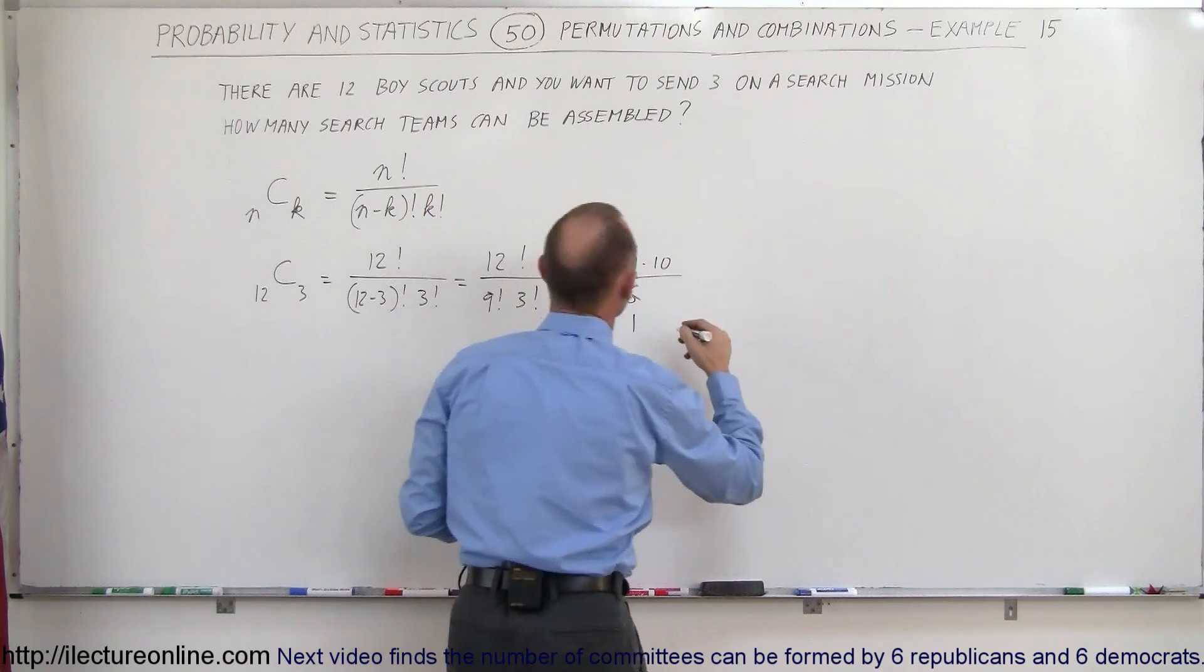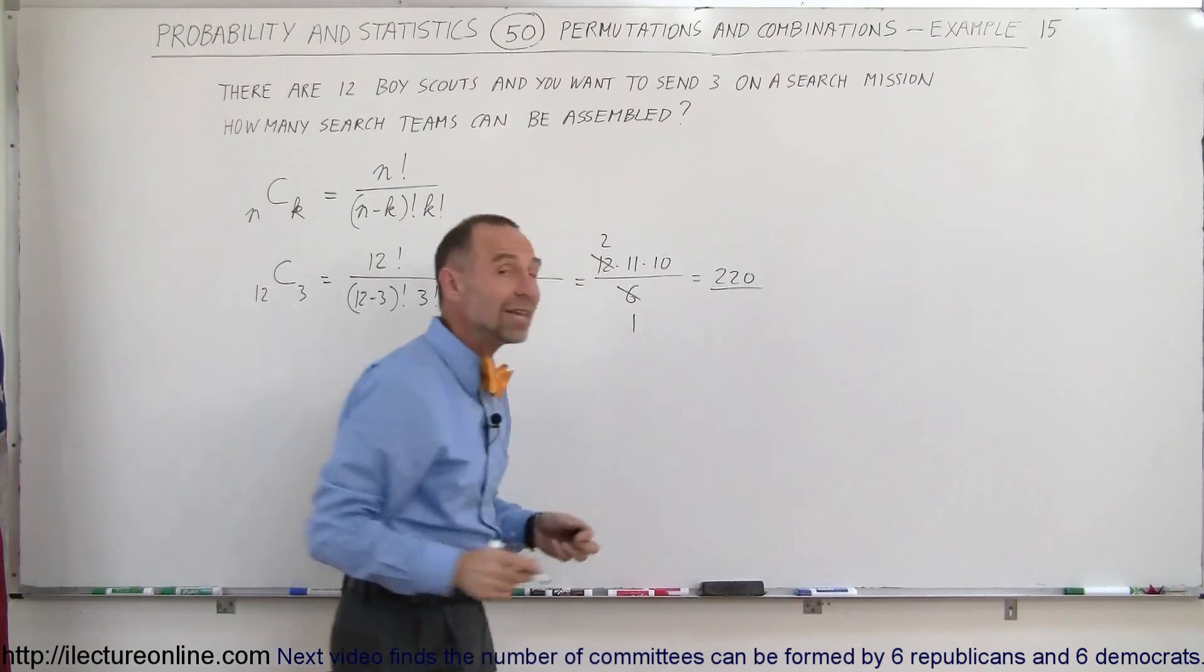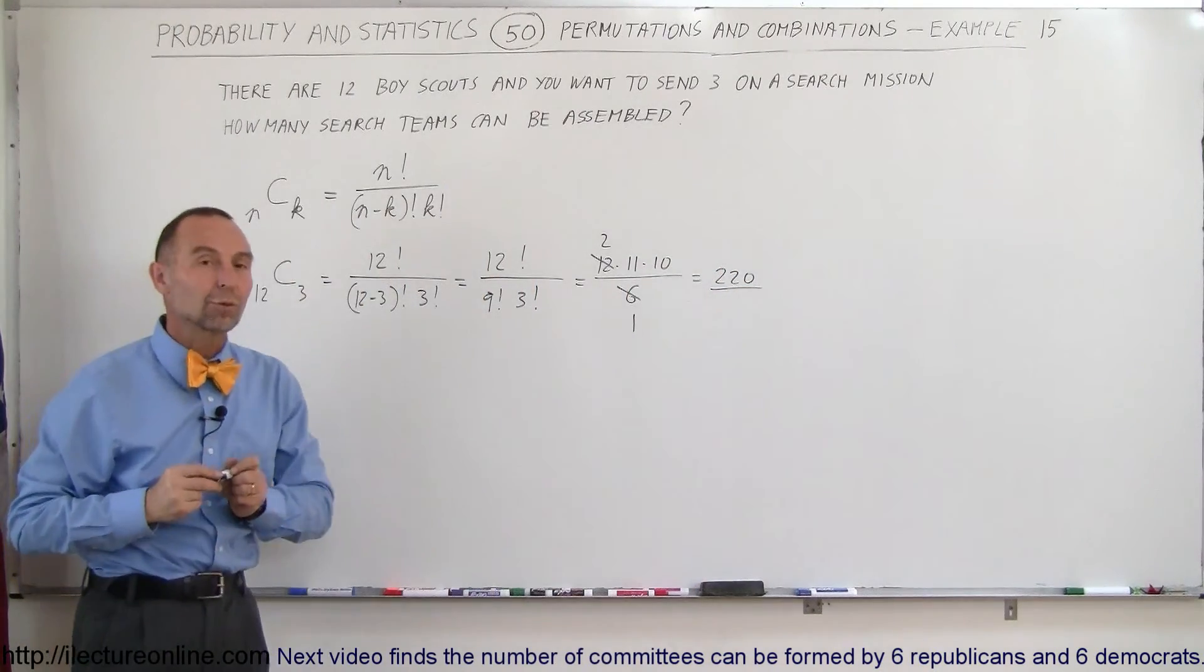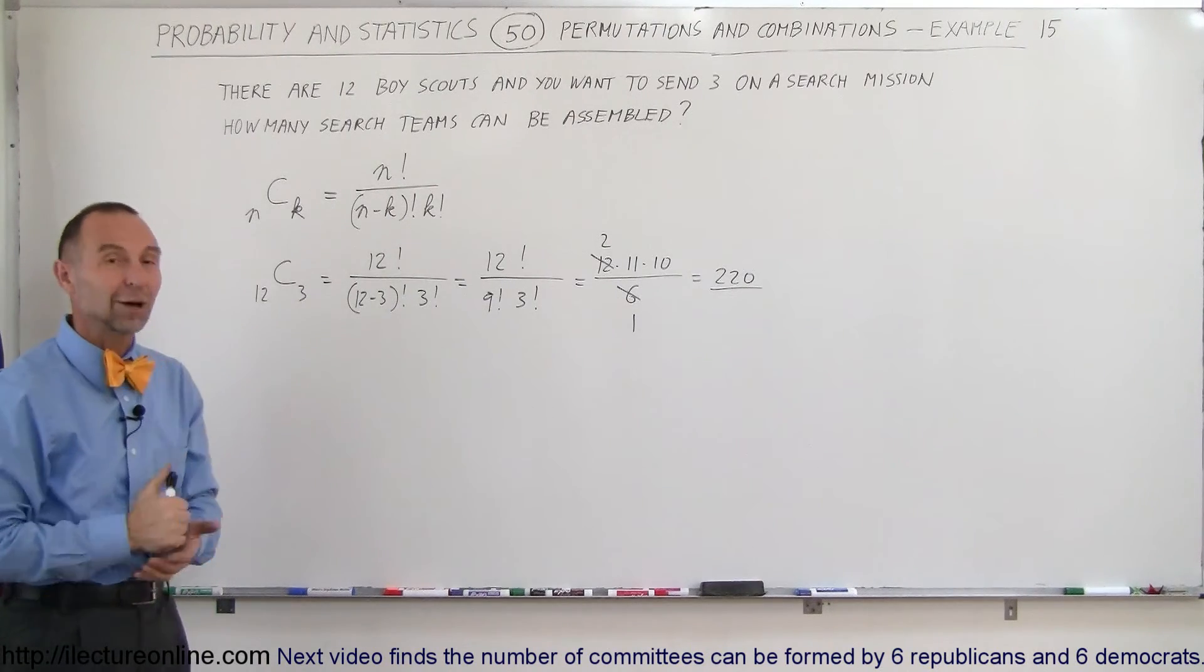So it would be 2 times 11 times 10, that's 22 times 10, that would be 220 different search teams can be sent. In each case, it would be a different combination of three Boy Scouts. And that is how we do that problem.